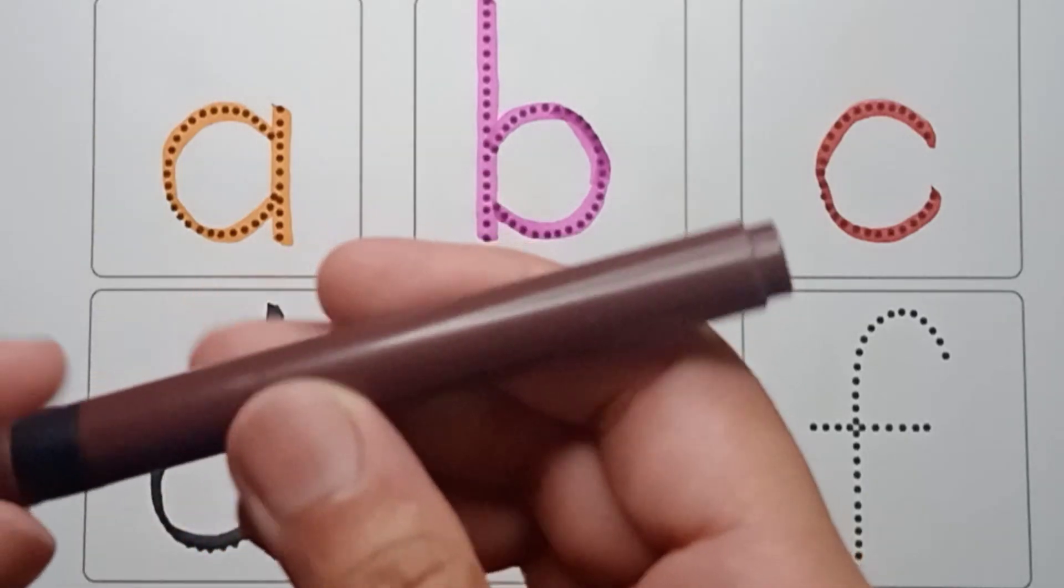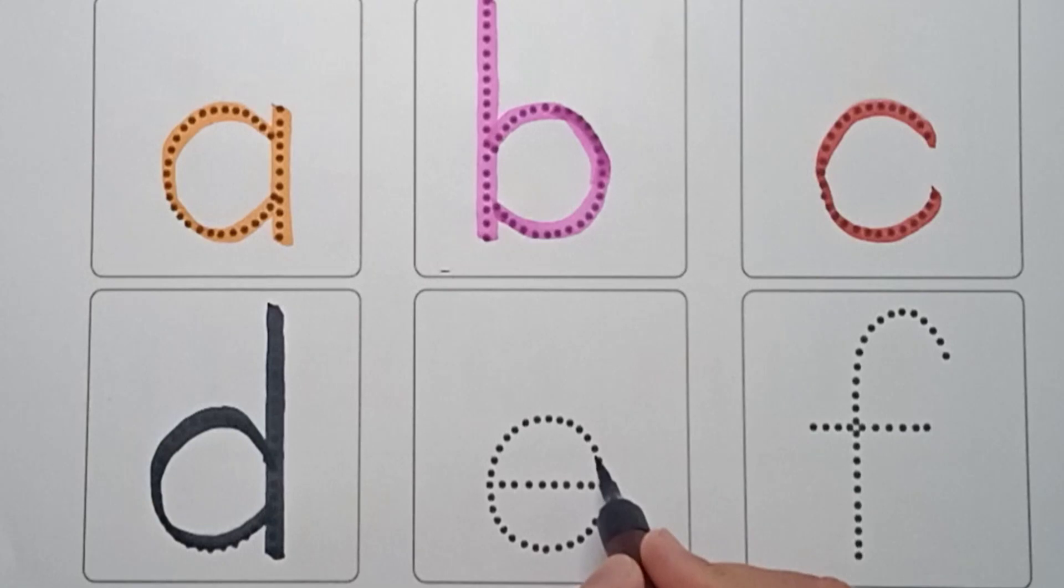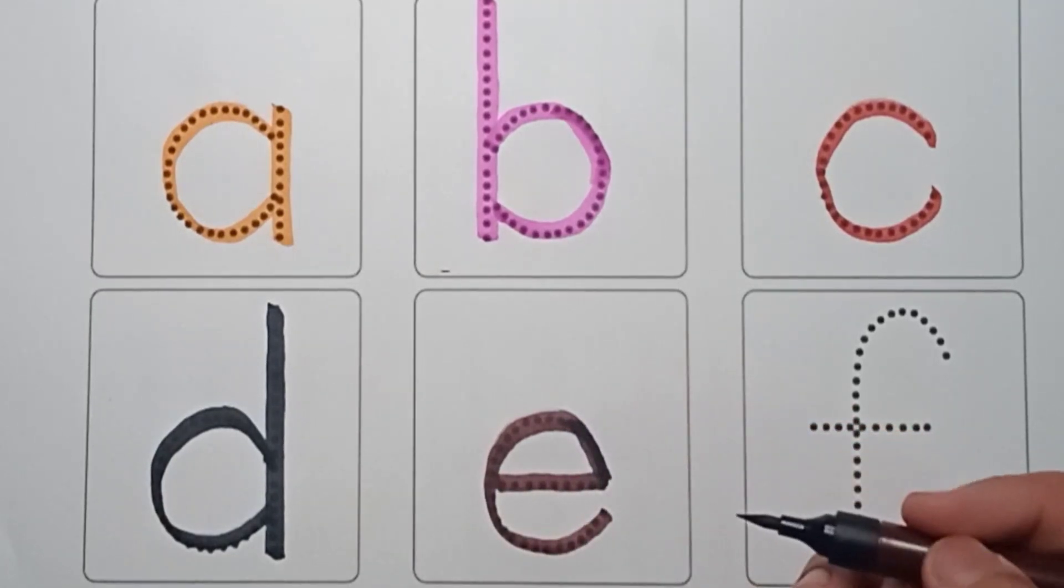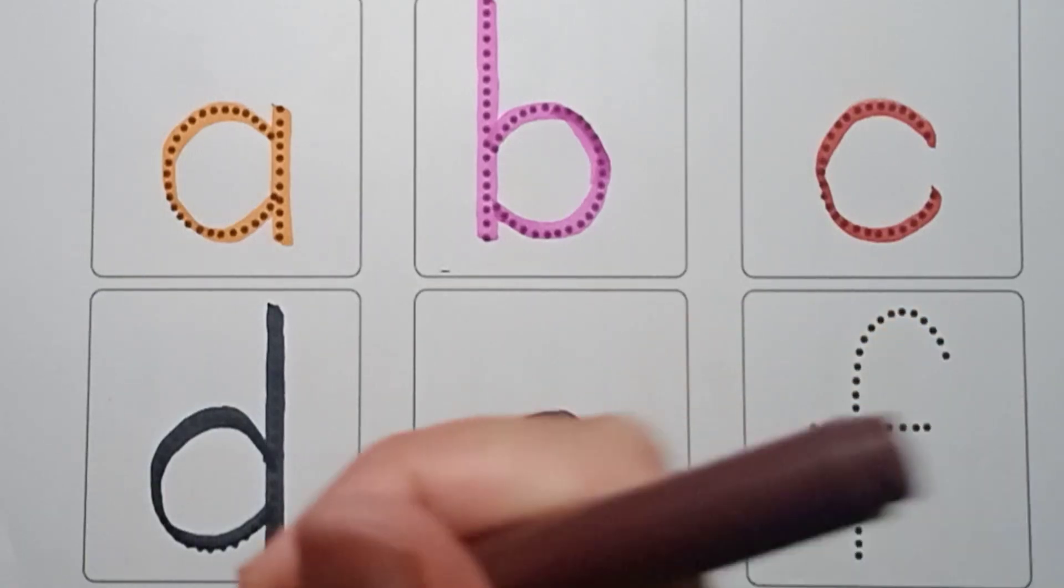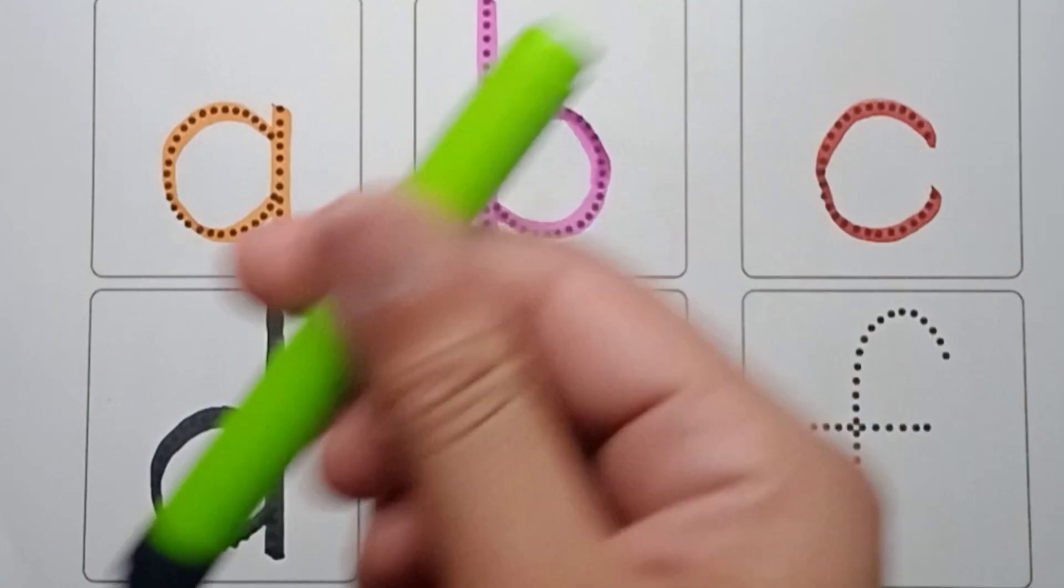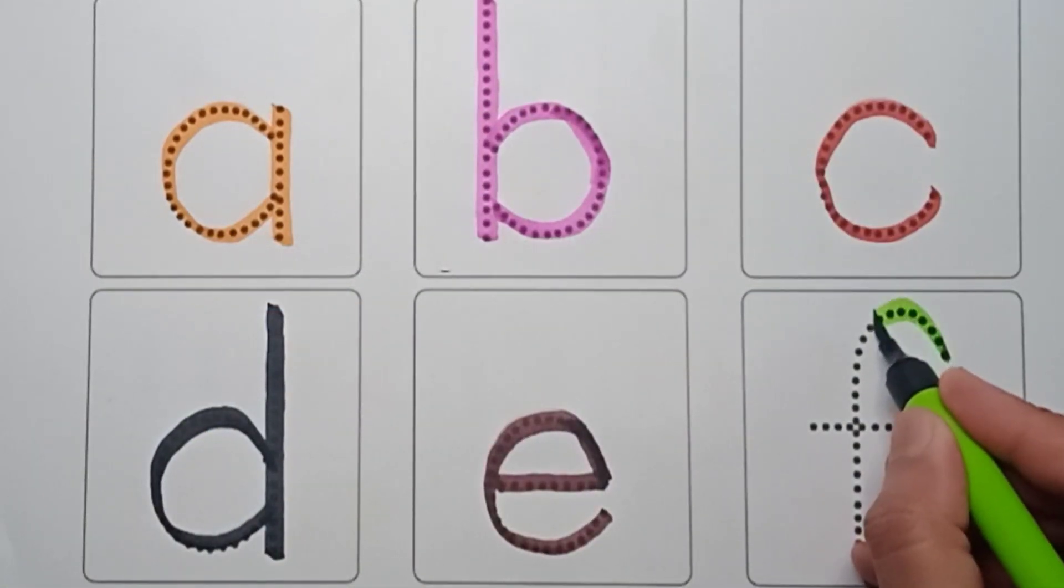It's brown color E. How do we write? First make a C and a small sleeping line. It's E. E is for elephant. Next letter is F. It's green color F. It's a small curve and standing line like this, and one sleeping line. It's F. F is for frog.